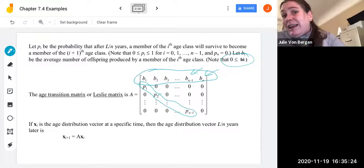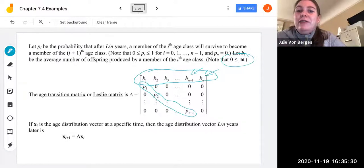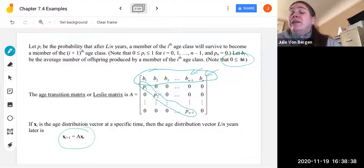If xi is the age distribution vector at a specific time, then the age distribution vector ln years later is found by multiplying A times xi. So we multiply using this age transition matrix or what we know as the Leslie matrix. We are going to take a look at two examples with mice and lizards.